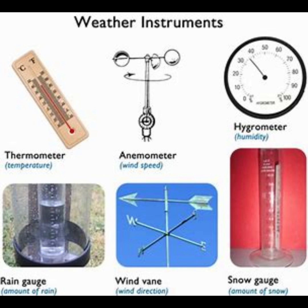Hygrometers measure humidity, often using materials that absorb moisture and change properties like size or electrical resistance. Anemometers measure wind speed with rotating cups or propellers, while wind vanes determine wind direction.